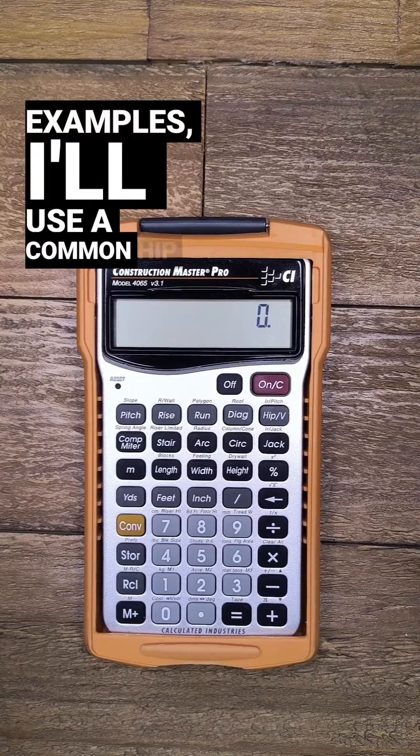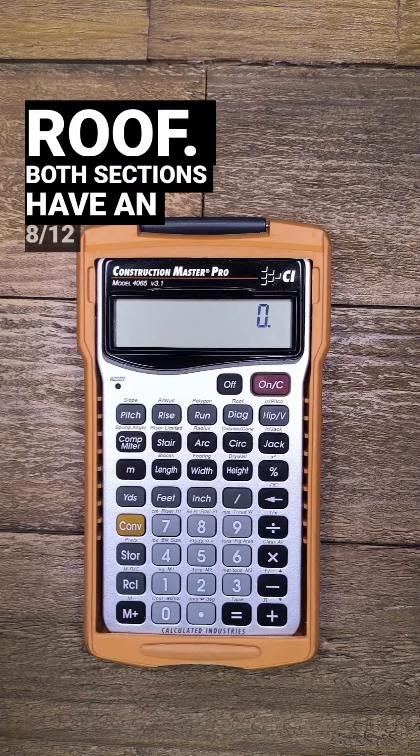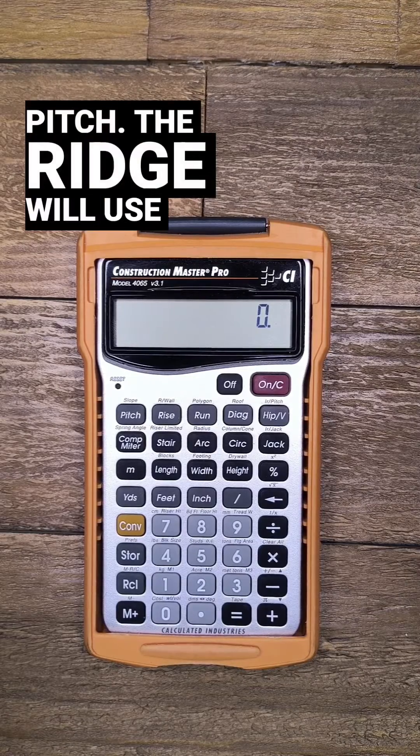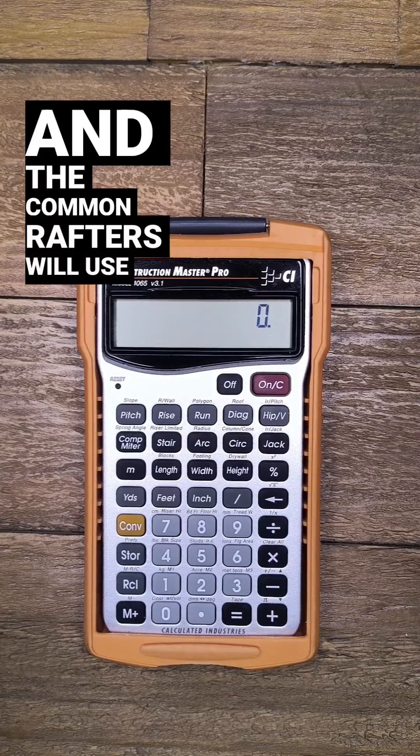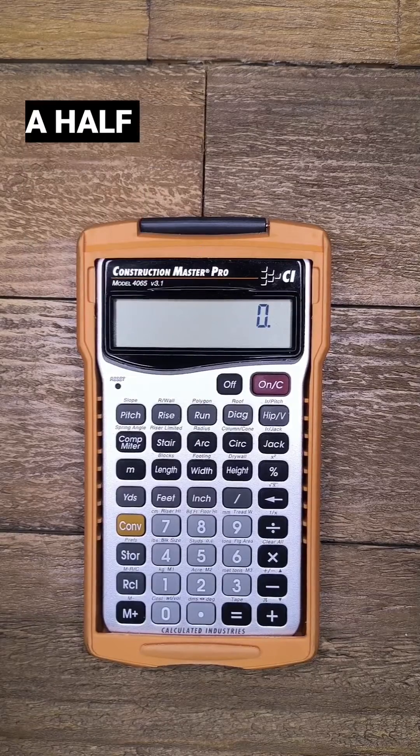For these examples, I'll use a common hip roof. Both sections have an 8-12 pitch. The ridge will use 2x stock, so an inch and a half thick, and the common rafters will use 4x stock, so 3.5 inches thick.